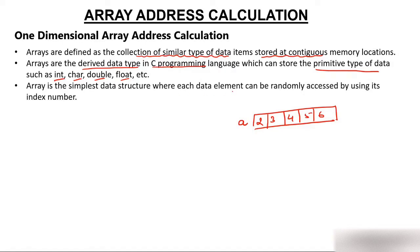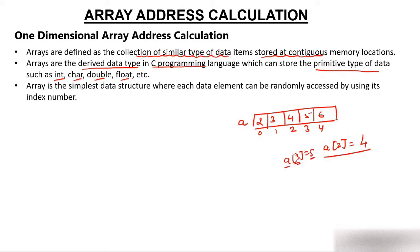Array is the simplest data structure where each data element can be randomly accessed by using its index number. If you want to access an element of this array, you use the index, which generally starts from 0: indices 0, 1, 2, 3, 4. For example, writing A[2] accesses element 4, and writing A[3] accesses element 5.